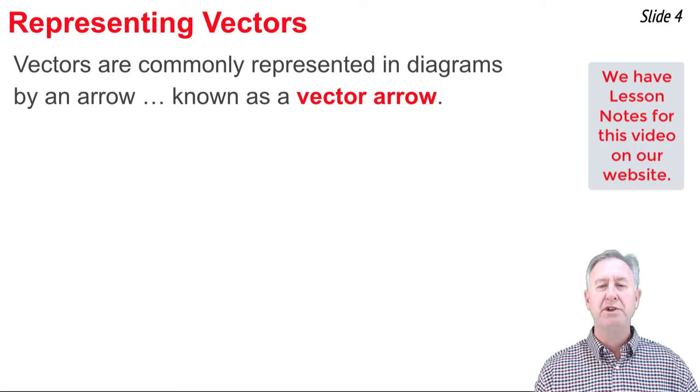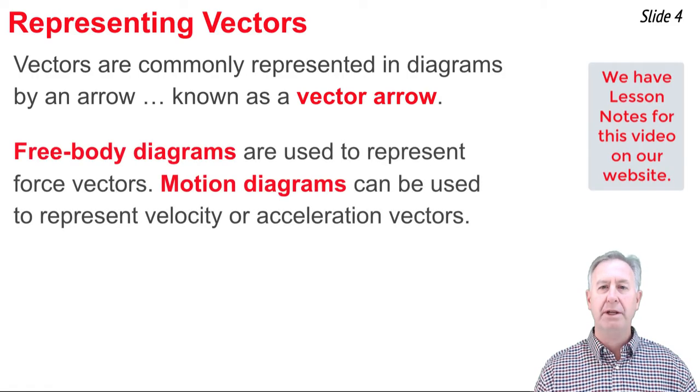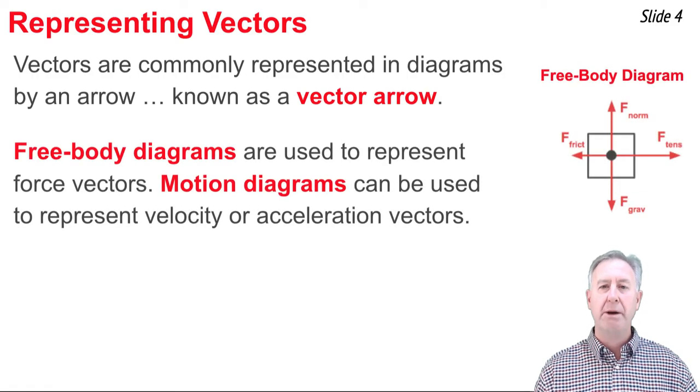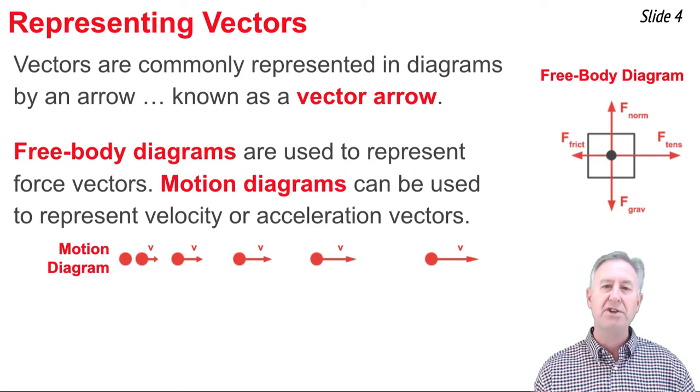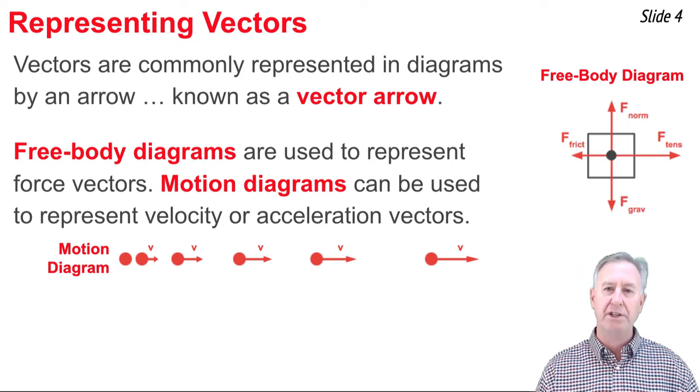In physics, we often use arrows to represent vector quantities in diagrams. We refer to these arrows as vector arrows. You've likely seen this already because in free-body diagrams, we represent the force vectors that act upon an object. And in motion diagrams, we represent the velocity and the acceleration vectors that an object experiences.